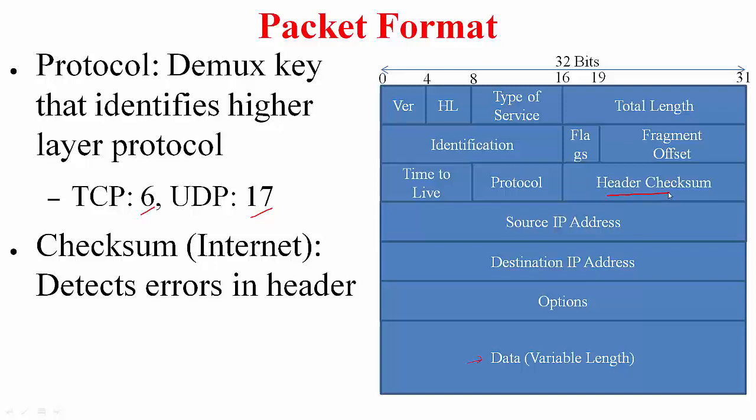Then comes again another field which you are familiar with, which is the internet checksum. This checksum is calculated only over the header. Why do you think that is? When we talked about router design we mentioned about the switching speeds, how a packet should spend the least amount of time in a router before getting out of the router. If this checksum field is calculated only over the header the router can quickly process the packet and get it out.